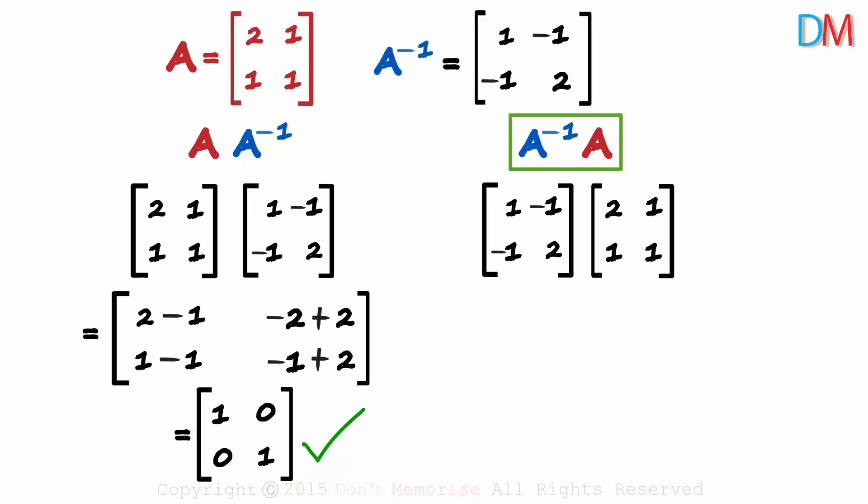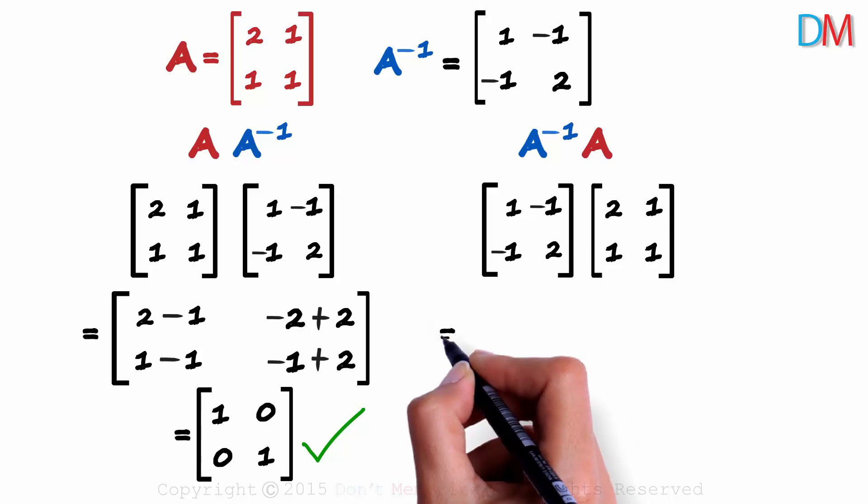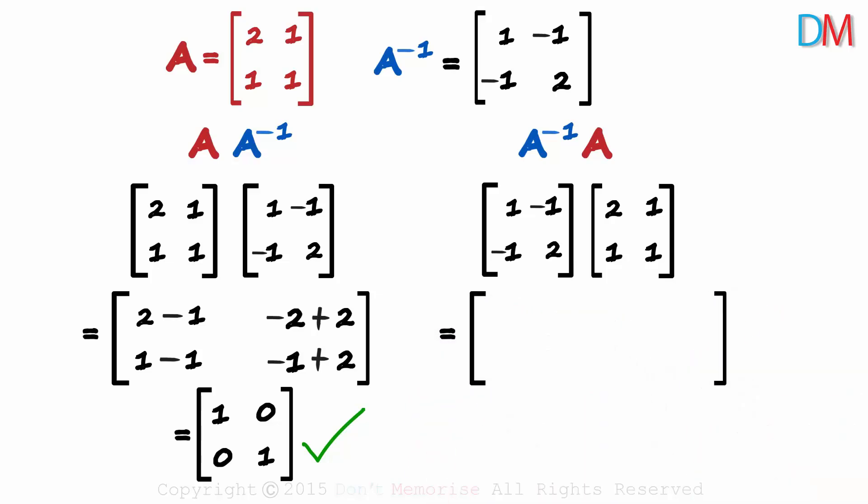What about this product? Why don't you pause the video and find out what this product gives us. This is what we get. This is the first row multiplied with the first column. This is the first row multiplied by the second column. Second times first. And second times second.